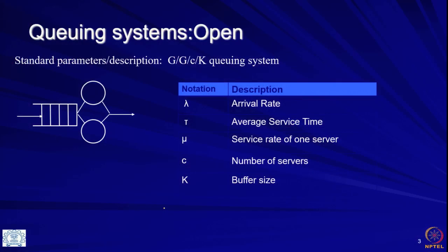As usual, I am just recapping whatever you have learned in the previous lectures. The notation includes arrival rate lambda, tau, mu, c, k. By now you should know what all of these mean: lambda is the arrival rate, tau is the service time, c is the number of servers, k is the buffer size, and mu is the rate at which each server works.